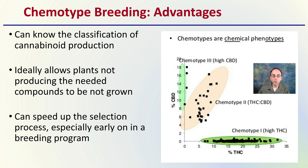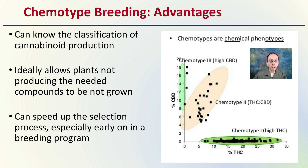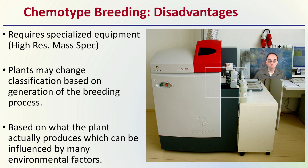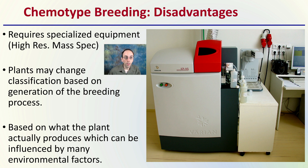The advantages of chemotype breeding are that you can know the classification of cannabinoid production in a plant, and it allows you to identify plants not producing the needed compounds so they're not grown. It can speed up selection early in a breeding program by eliminating plants that would be a waste of time. The disadvantage is that it typically requires specialized equipment — high-resolution mass spec is a high-end piece of equipment needed to assess the chemical profile. Plants may also change classification across generations of breeding, and production can be influenced by many environmental factors.